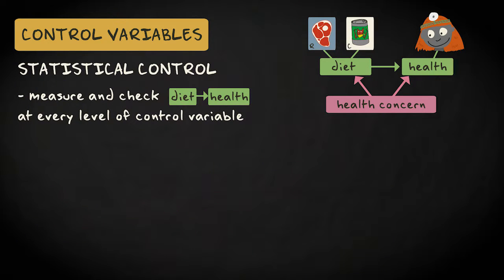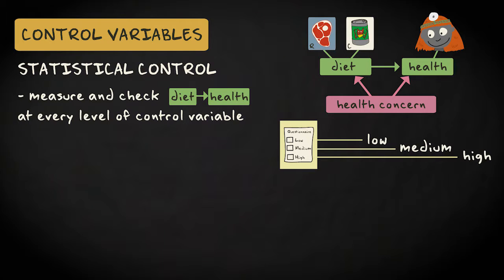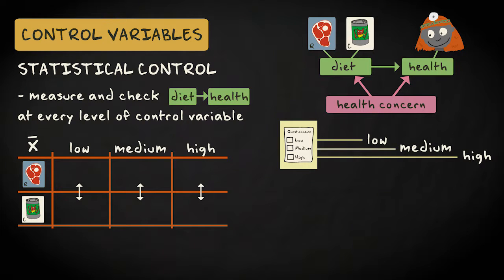Suppose we're unable to keep health concern constant or randomly assign cats to the diets. We can measure health concern in owners and categorize their health concern as low, medium, or high. We can now statistically control for health concern by seeing if the mean health scores differ in the low, medium, and high concern levels.